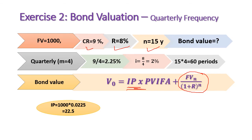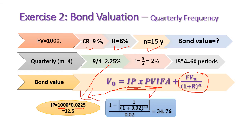The quarterly interest payment is: face value times the quarterly coupon rate of 2.25%, so 1,000 times 0.0225 equals 22.5 Egyptian pounds every three months. The present value interest factor for annuity, using the quarterly discount rate of 2% over 60 periods, equals 34.76.